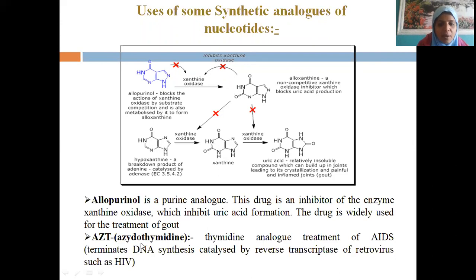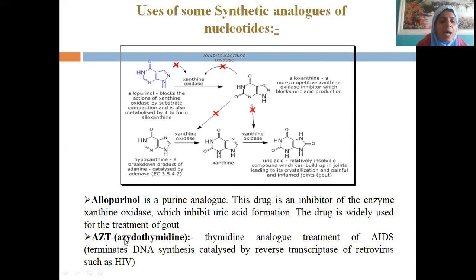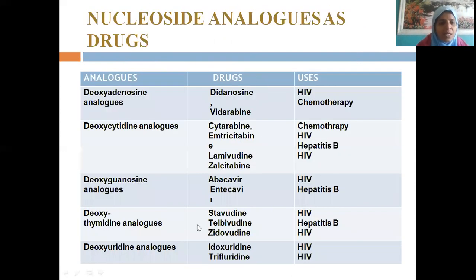Another analogue is azidothymidine, a thymidine analogue used in the treatment of viral infections like AIDS. It terminates DNA synthesis and stops cell multiplication. It inhibits reverse transcriptase of retroviruses such as HIV — similar to how allopurinol inhibits xanthine oxidase, azidothymidine inhibits reverse transcriptase so cells cannot multiply.